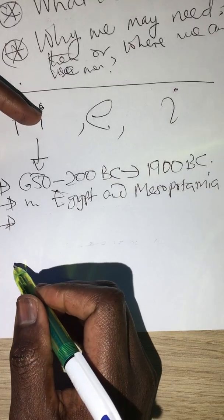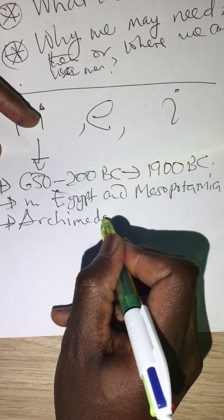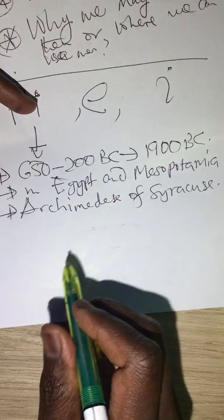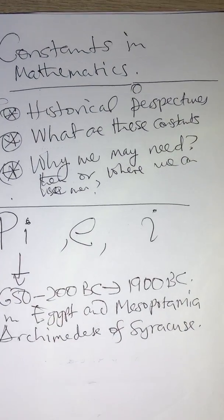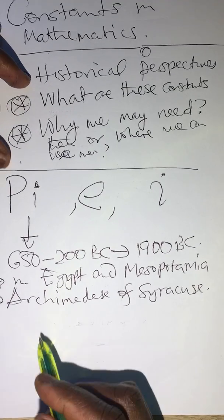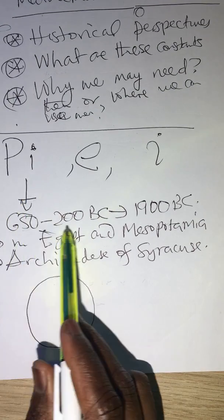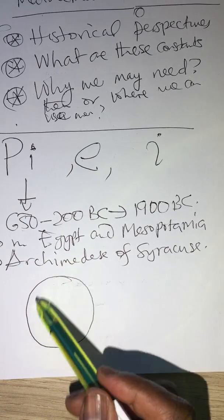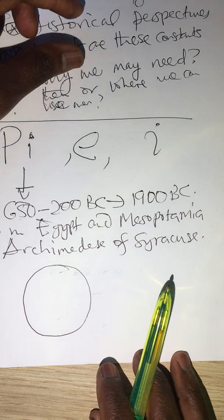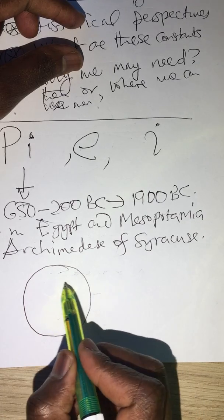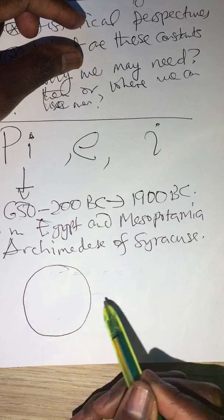The first group of people who actually tried to calculate the value of pi were the Archimedes — Archimedes of Syracuse. They used a lot of sequences to try to estimate the value of pi, and in their trial they came close to the value of pi. So they tried a lot of things with the circle, because actually the period when pi came into existence was the period when they were trying to learn about the circle.